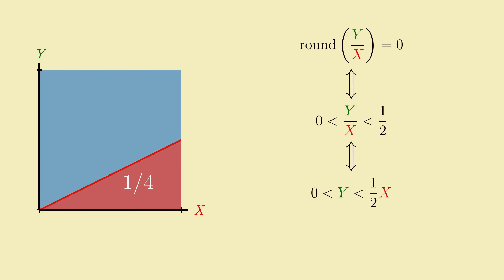From here, we can do the same sort of thing to find the probability that y over x rounds to the other even numbers. For the even number 2, we get that y over x rounds to it if y over x is between 1.5 and 2.5, or 3 halves and 5 halves if written as fractions, which corresponds to the region of the unit square between the two lines y equals 3 halves x and y equals 5 halves x.